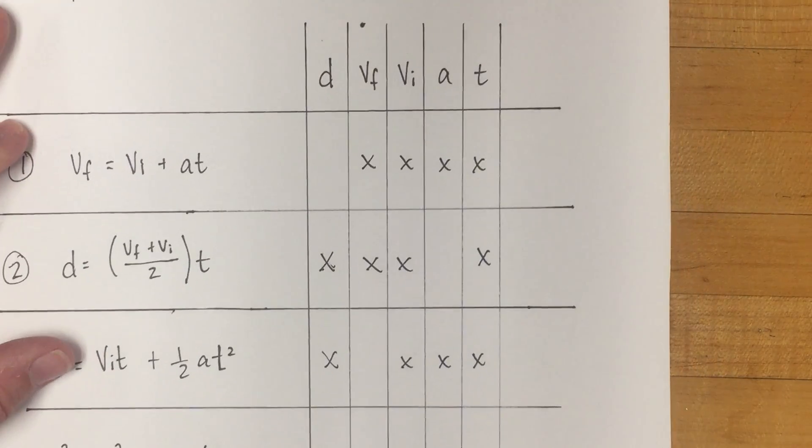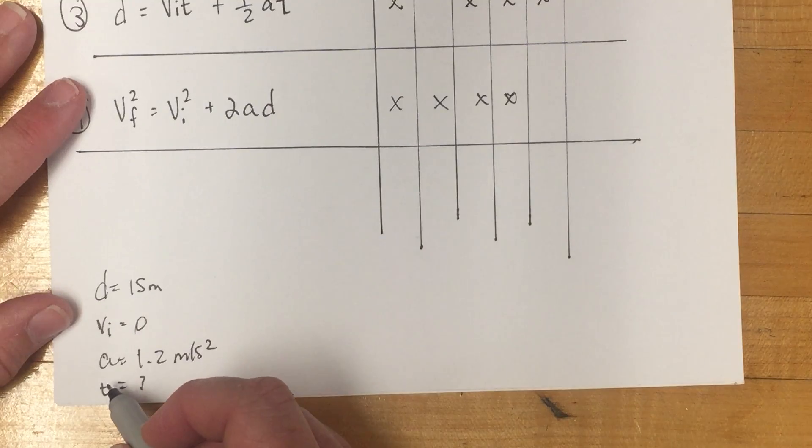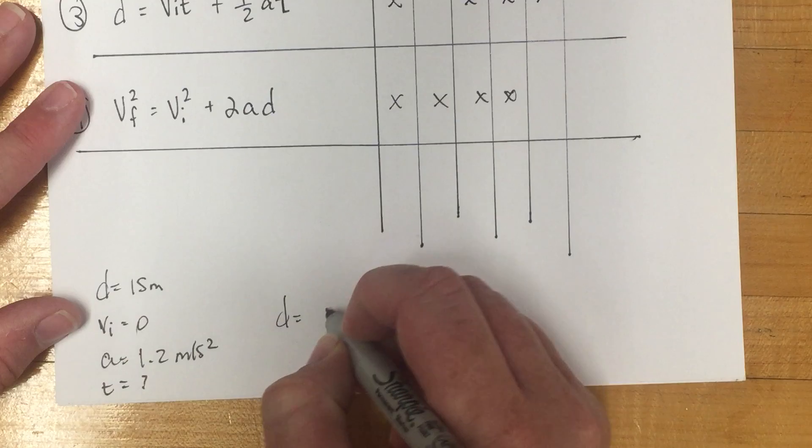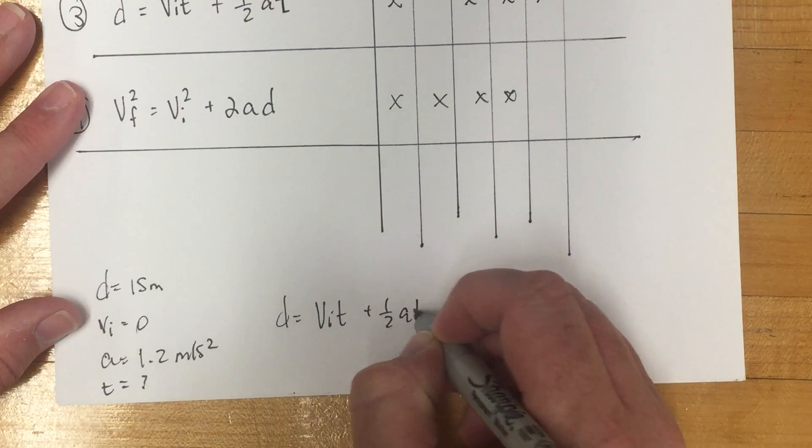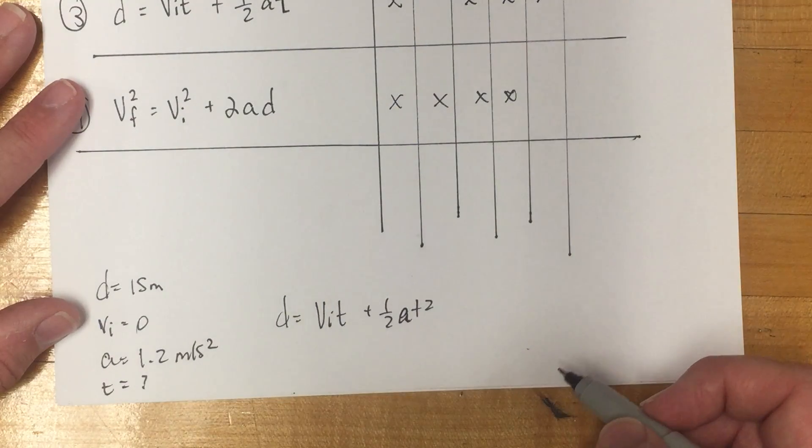Well, the only one that has d, vi, a, and t in it is equation 3. So if you can determine your variables well, it will help lead you to the equation that you need. So then I would say d equals vi t plus 1.2 at squared, and then you could continue the problem on from there.